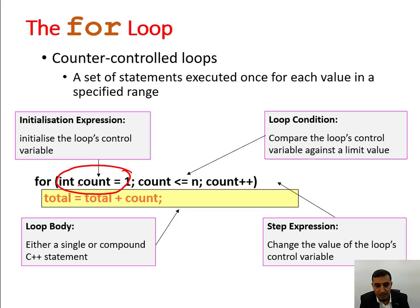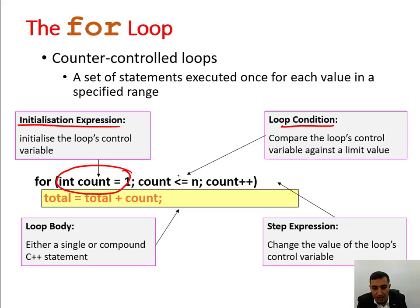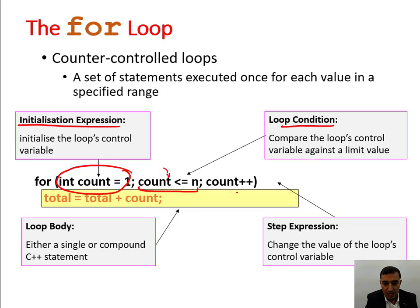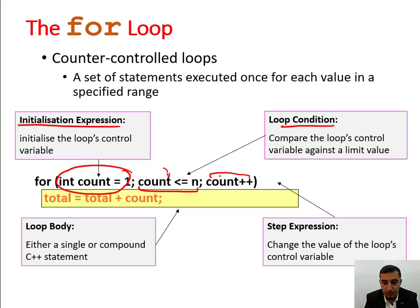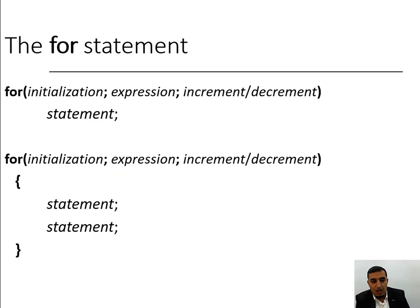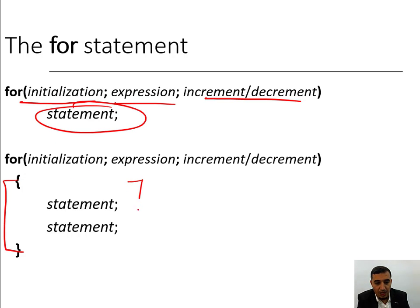The for loop contains: first, the initialization expression — the initial value; second, the loop condition — this must be satisfied to enter the loop; if the condition is not satisfied, you cannot access the loop. Finally, the step — the increment or decrement, going by ones, twos, fours, etc. We have initialization, expression, increment/decrement, and either one statement or a block of statements.